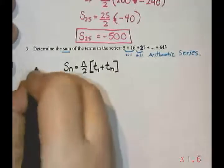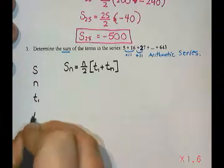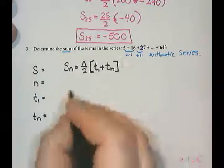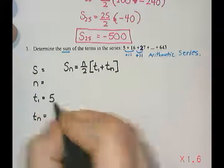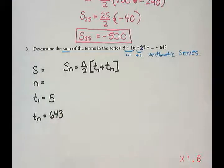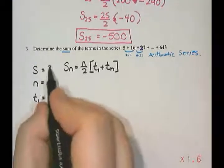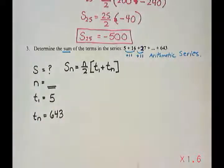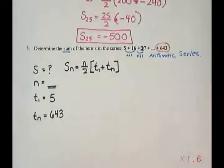It works out. And I'm going to list S_n, t₁, t_n. So I know term 1 is 5, and I know that term n is 643. But I have a little problem here. I want to find the sum. That's what I'm supposed to find in the question. But I don't know how many terms there are. And even if I tried to use the other formula, I still wouldn't know how many terms there are.